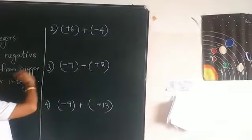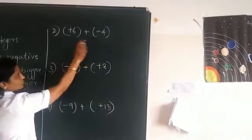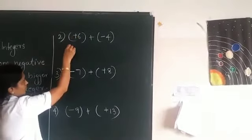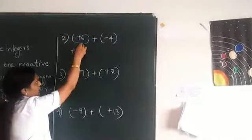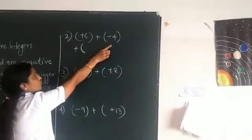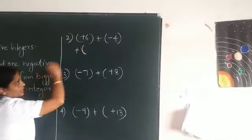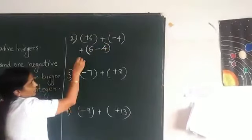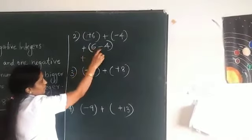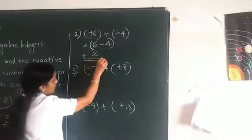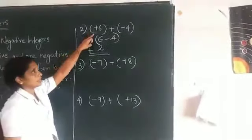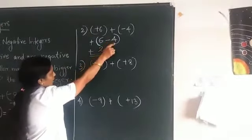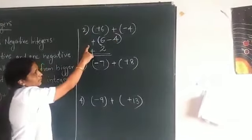Next problem: positive 6 plus negative 4. How will we write that first step? The bigger number's symbol is positive. Within brackets, we do the operation — subtract smaller from bigger: 6 minus 4. So positive 6 minus 4 equals 2. Plus 2 is the answer. Both numbers are not the same, so we follow the rule: subtract smaller from bigger, then put the bigger number's symbol.